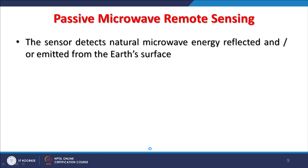In passive microwave remote sensing, the sensor detects natural microwave energy — no artificial or synthetic energy is sent by the sensor itself, only natural emission in the microwave part of the EM spectrum from different objects or the earth's surface. These sensors on board satellites are capable of detecting natural microwave energy which may be reflected or emitted from the Earth's surface, or from the atmosphere where some microwave energy may interact with the Earth's surface and be reflected again.